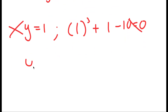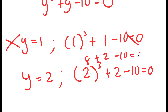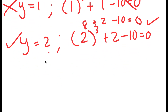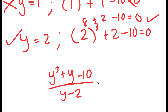Now I'm going to try y equals 2. When y equals 2, I get 2 cubed plus 2 minus 10 equals 0. 2 cubed is 8, so I have 8 plus 2 minus 10. 8 plus 2 is 10, and 10 minus 10 is 0. So this works, meaning y equals 2 is a solution. I'm going to divide y cubed plus y minus 10 by y minus 2, because y minus 2 equals 0 means y equals 2 is a solution.